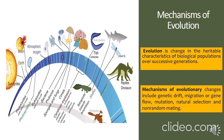Evolution is the change in the heritable characteristics of biological populations over successive generations, and there are identified mechanisms of evolutionary changes. These are genetic drift, migration or gene flow, mutation, natural selection, and non-random mating.